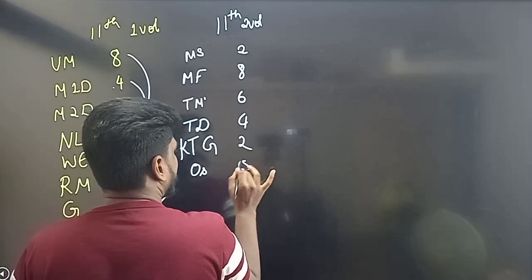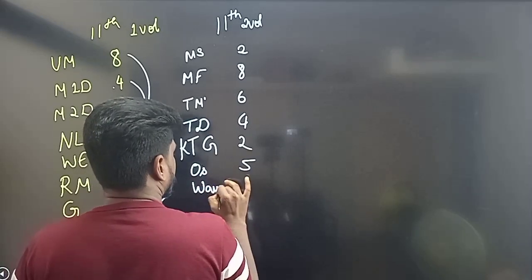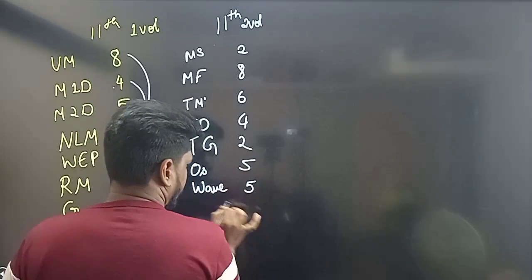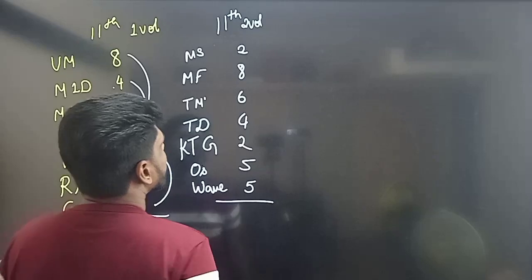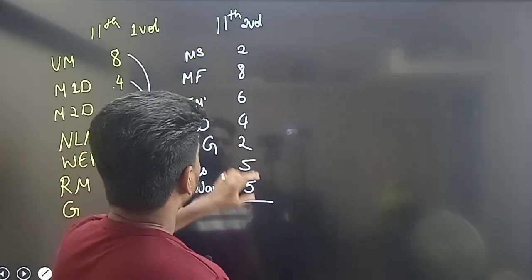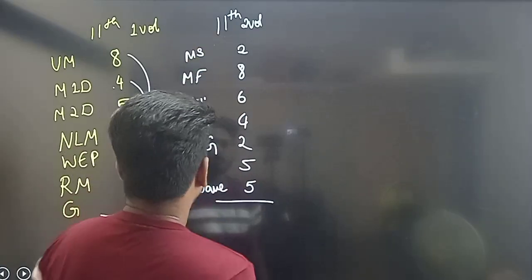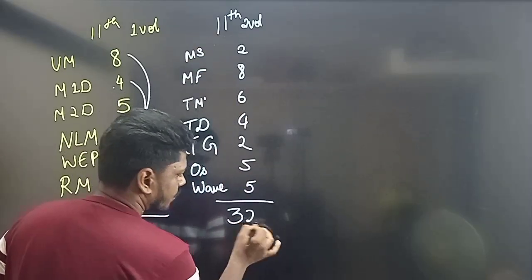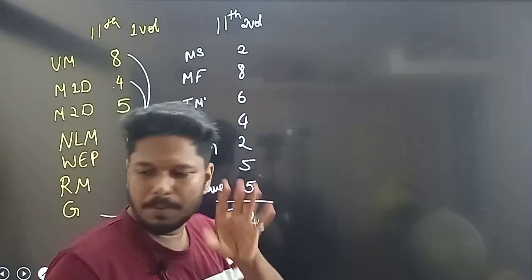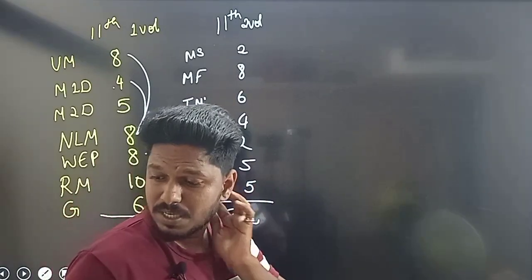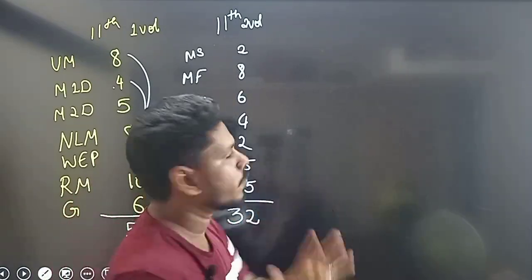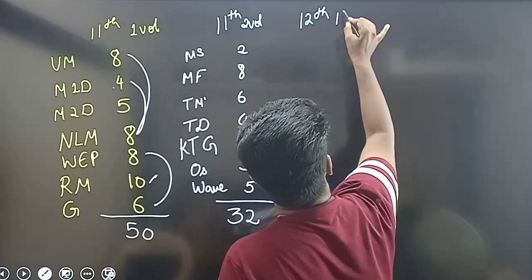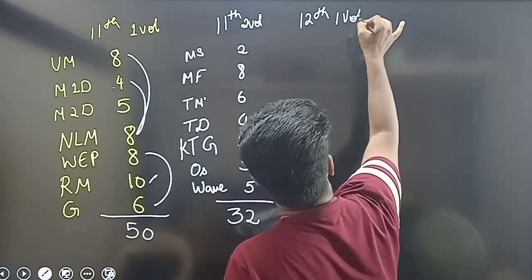That comes to approximately 32 lectures for the second volume. The second volume book is comparatively easy — it is the first volume book that is more demanding.